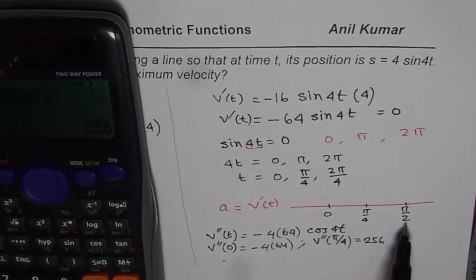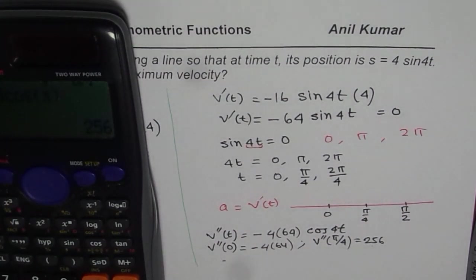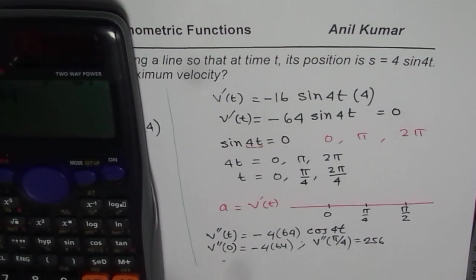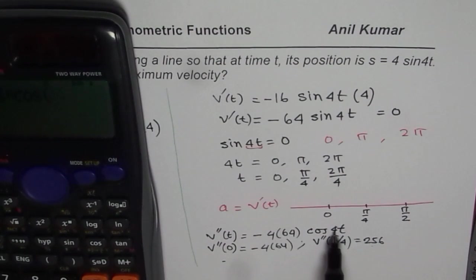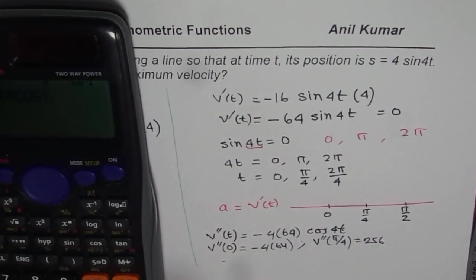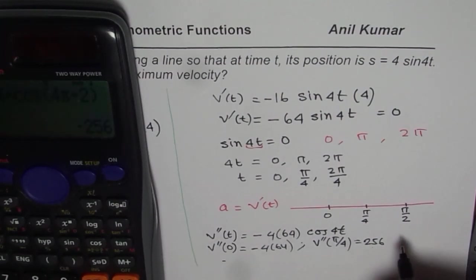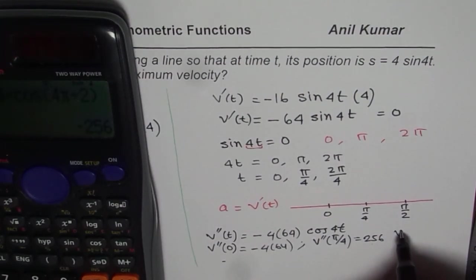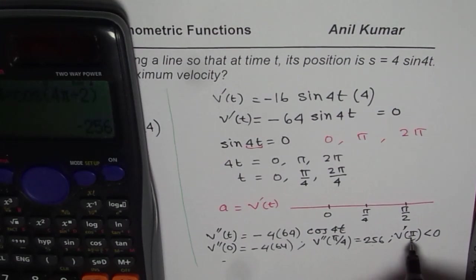Now let's test at pi by 2 also. At pi by 2, the value will be negative 4 times 64 times cos of 4 times pi by 2, that means 2 pi, which is negative. So for pi by 2, the second derivative is less than 0, so it is negative.